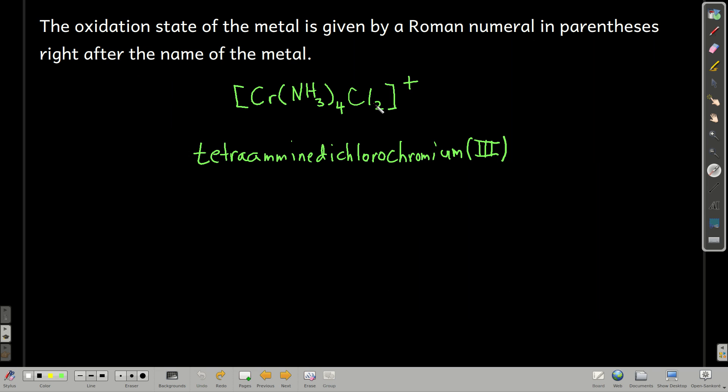You always say the oxidation state of the metal in Roman numerals, in parentheses right after the name of the metal, just like we did in ionic compounds. Here, we would have tetramine dichloro chromium(III). It's chromium(III) because each of the chlorides is negative one. There's an overall plus one charge, so two negatives, this has to be a positive three. There's no charge on the ammonias.